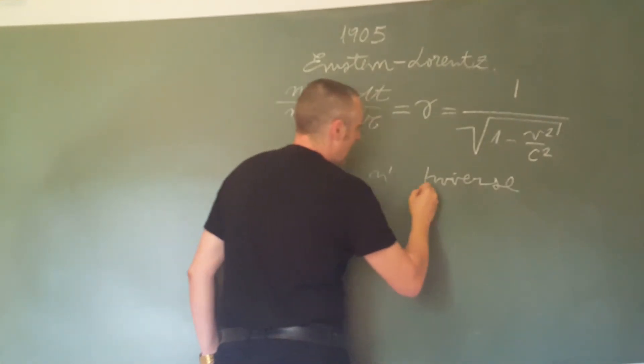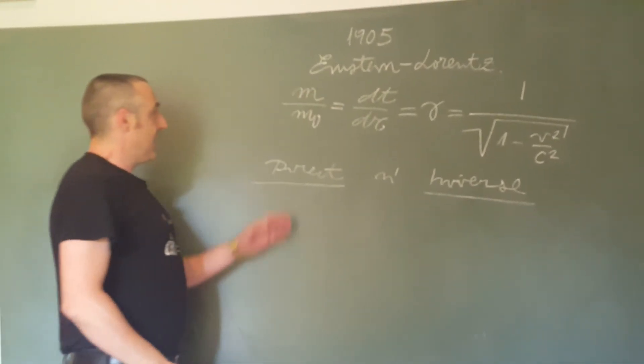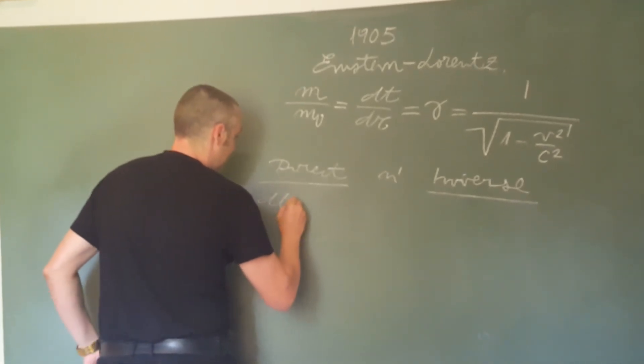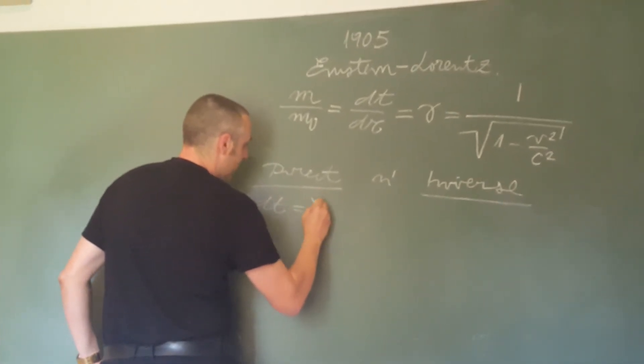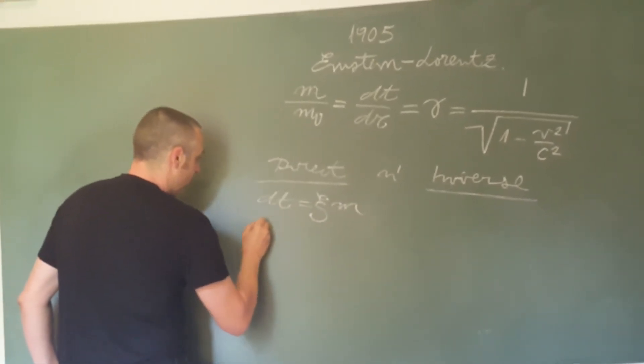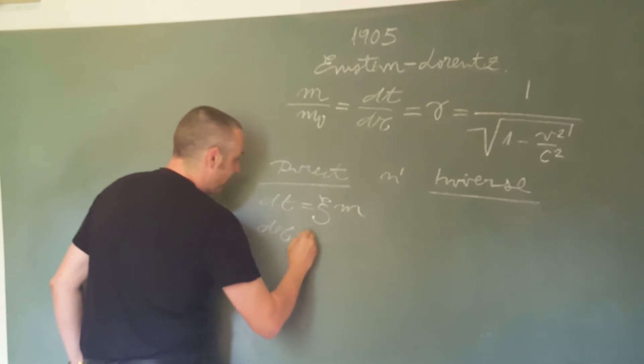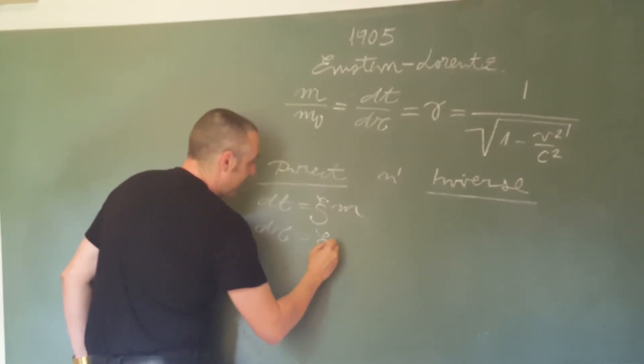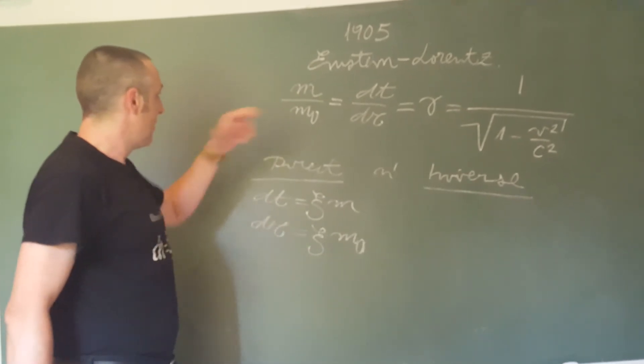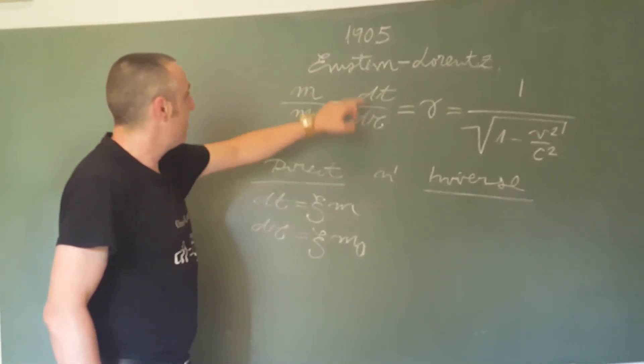The direct relationship is my theory. dT is equal to the Olivenoz constant times M, and also the direct relationship is equal to the Olivenoz constant times the proper mass m₀.